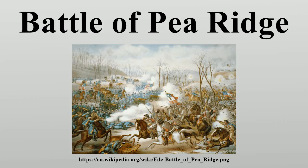On the night of March 6, Colonel Grenville Dodge, with Curtis' approval, led several parties to obstruct the Bentonville Detour, felling trees on the road between 12-corner church and Cross Timber Hollow. That same evening, Van Dorn's Army, with Price's Division leading, began the long march to Cross Timber Hollow. The night march was slowed by clearing Dodge's obstructions, Van Dorn's lack of an engineer corps, poor staff work, and the soldiers' exhaustion.